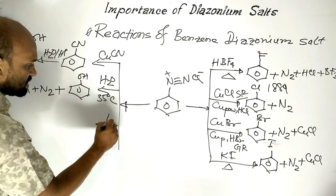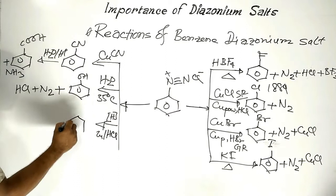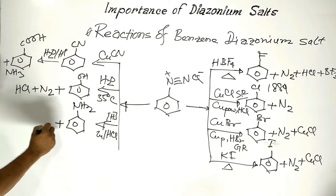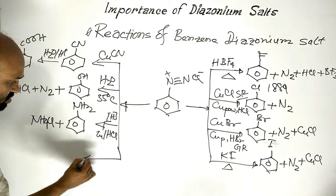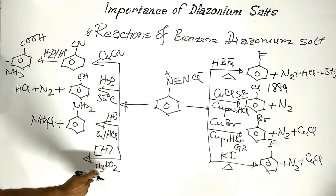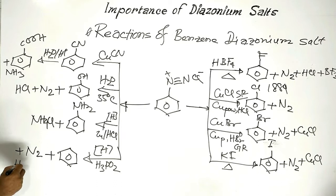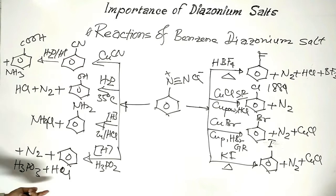When benzene diazonium chloride is treated with a reducing agent — specifically zinc and hydrochloric acid — it converts to aniline; ammonium chloride is formed as a byproduct. When benzene diazonium chloride is reduced by hypophosphorous acid (H₃PO₂), it converts to benzene; byproducts are nitrogen, phosphorous acid, and hydrochloric acid.